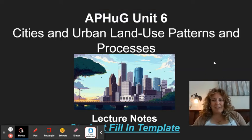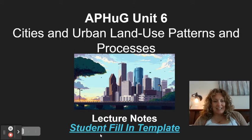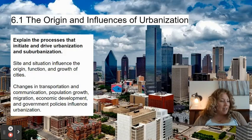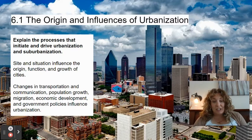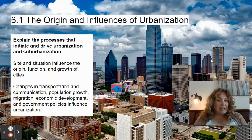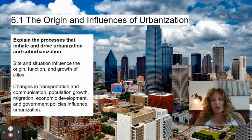Hi AP humans, Miss Jefford's coming at you with Part 1 of Unit 6 notes: Cities and Urban Land Use and Patterns and Processes. 6.1 is the origin and influences of urbanization. Our standard is asking us to explain the processes that initiate and drive urbanization and suburbanization. Things you need to understand are site and situation, transportation, population and migration, economic development, and government policies.